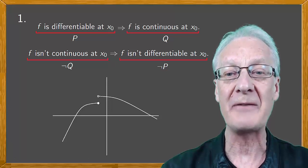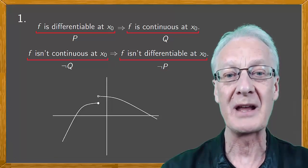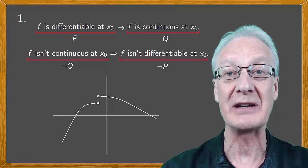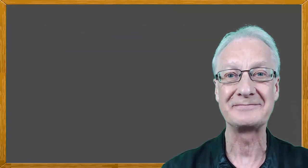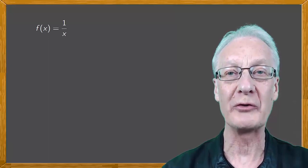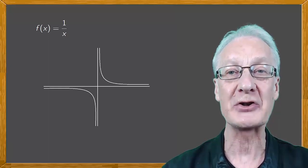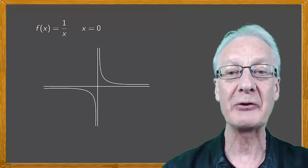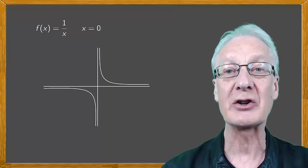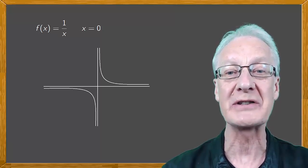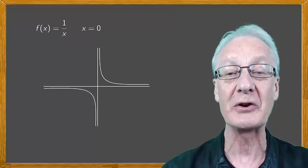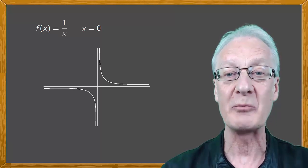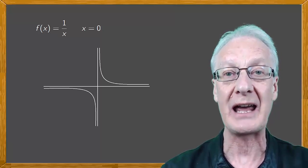Remember if f is not continuous at x0 as is the case shown here then it follows immediately that we can't differentiate f at x0. Think about the function f(x) = 1/x. Now some might say that this function isn't continuous at x = 0 but that's wrong. x = 0 isn't in the domain of f and continuity is only considered at points of the domain. So this function is neither continuous nor discontinuous at x = 0. In the same way differentiability is not considered at x = 0.